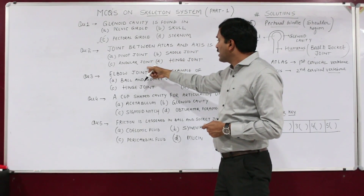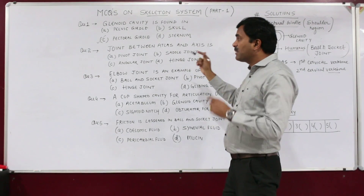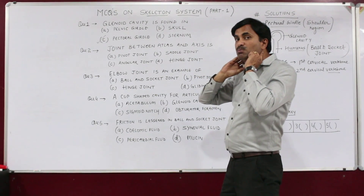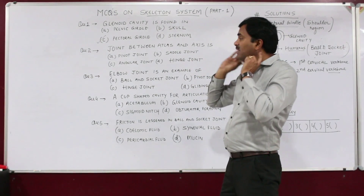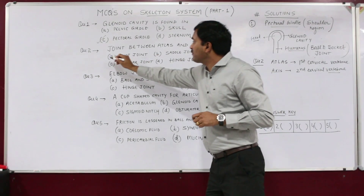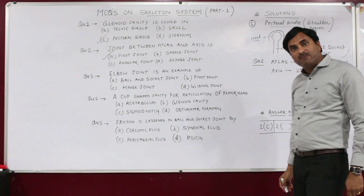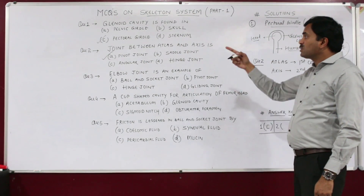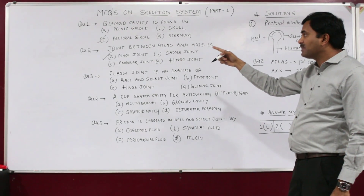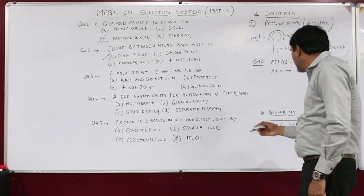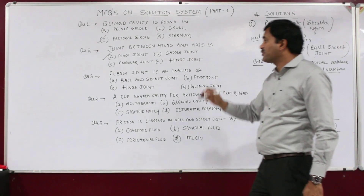The options given are pivot joint, center joint, angular joint, and head joint. We are able to move the skull and neck region with the help of this joint, which is the pivot joint. So the answer to question number two is A — pivot joint.